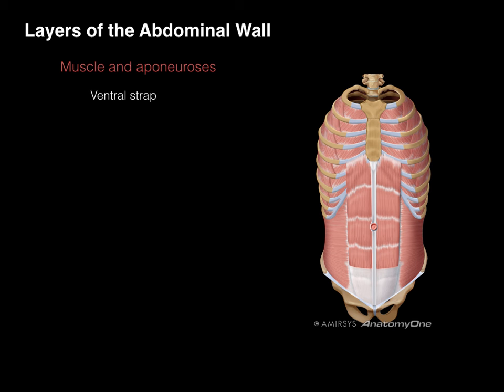The ventral strap muscle is the rectus abdominis. Rectus means straight, abdominis refers to the abdominal region. Unlike the obliques which come in at angles, this muscle runs straight up and down from the bottom of the ribs and sternum all the way down to the inguinal ligament. The linea alba separates the two bellies. The tendinous intersections between them give the six-pack appearance — actually an eight-pack. This muscle assists with flexion of the vertebral column.